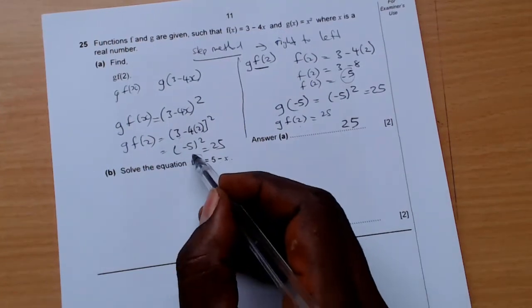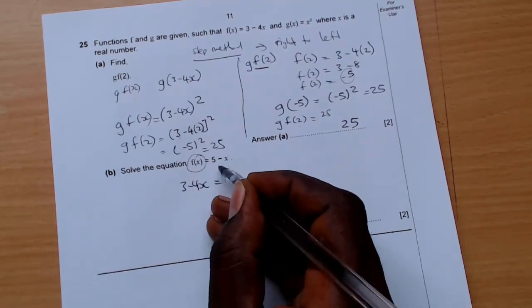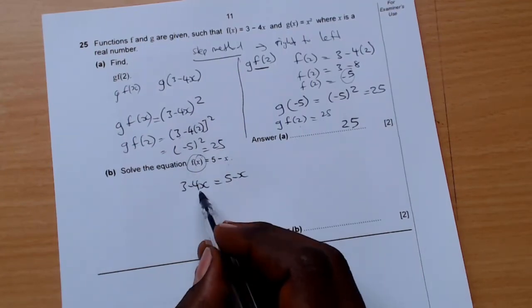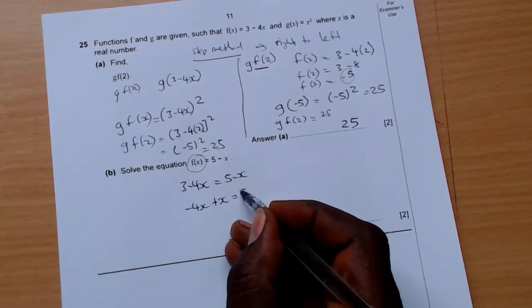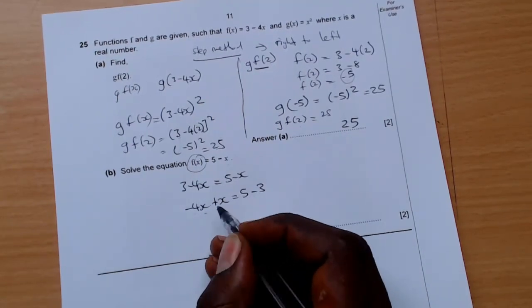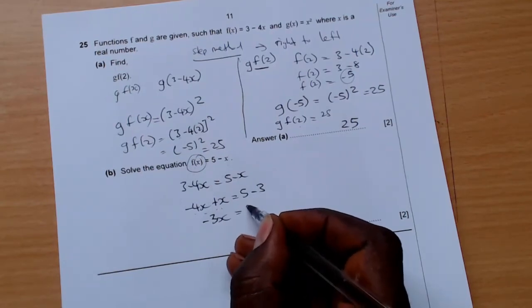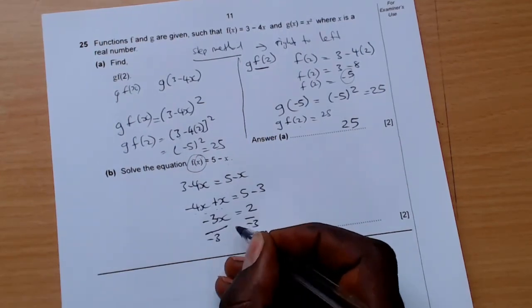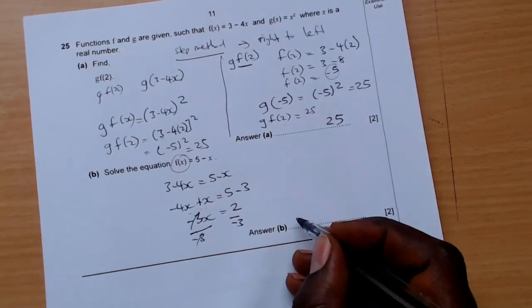So f(x) we already know is 3 minus 4x. We keep this one here, we bring this one there, it becomes a positive. The 5 remains, the 3 goes there, it becomes minus. So minus 4x plus x is minus 3x. 5 minus 3 is positive 2. We divide by negative 3, so x equals to negative 2 over 3.